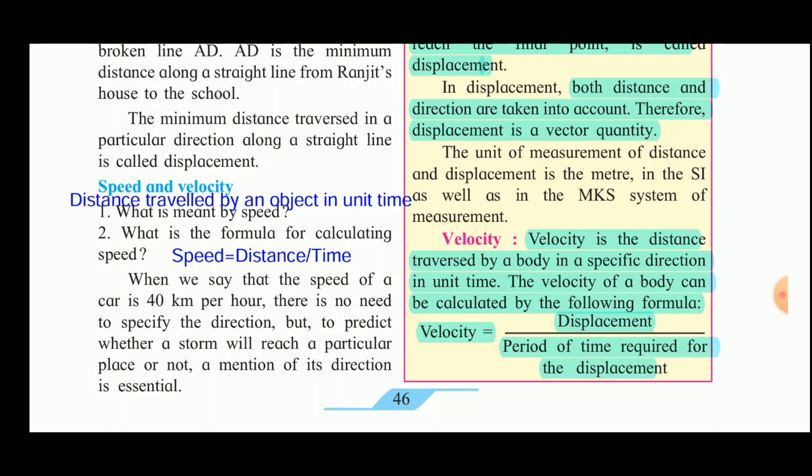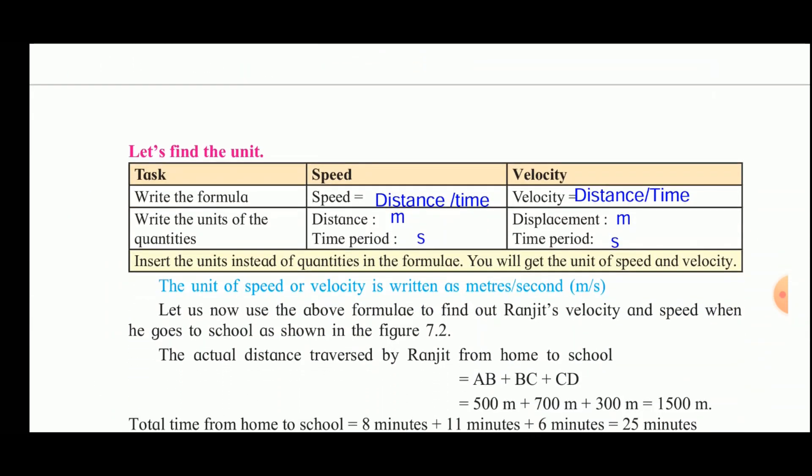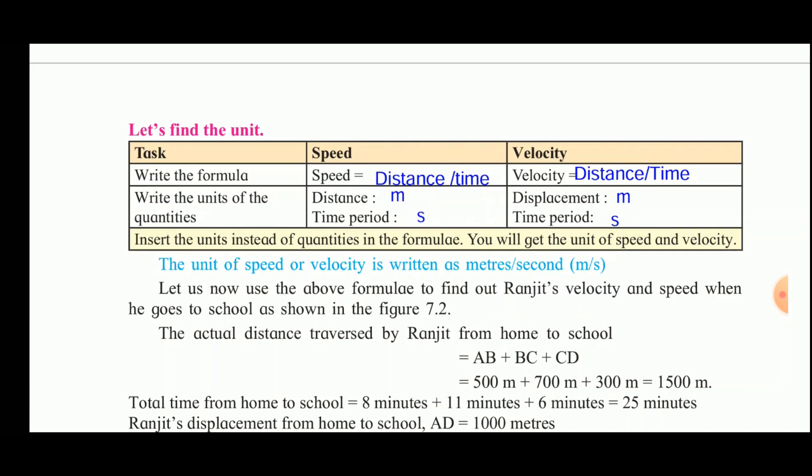Velocity is the distance traversed by the body in a particular direction in unit time. Velocity is given by displacement divided by the period of time required for the displacement. Thus speed is a scalar quantity and velocity is a vector quantity. Speed is given by distance upon time and velocity is given by displacement upon time.